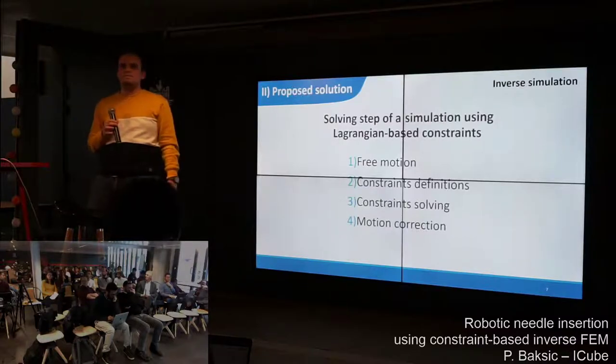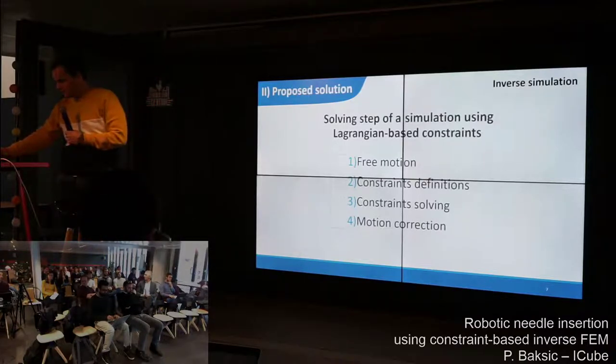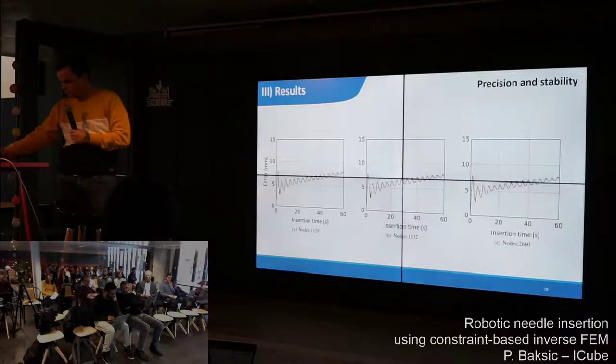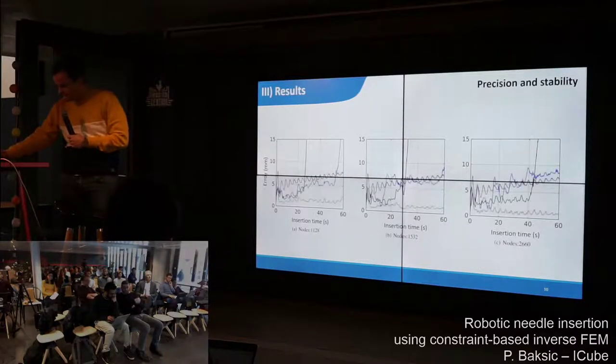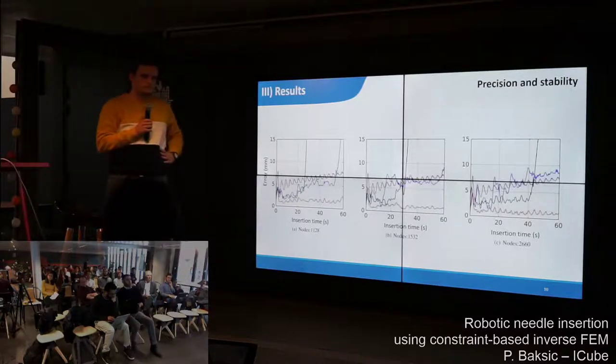Could you show again the error curves you were displaying? For your method, you said it was about two millimeters error and quite constant during the whole interaction. Do you have an explanation? It seems quite stable in time, whatever how deep you are in the tissue. Where does this two millimeters error come from? It seems not related to the mesh refinement.